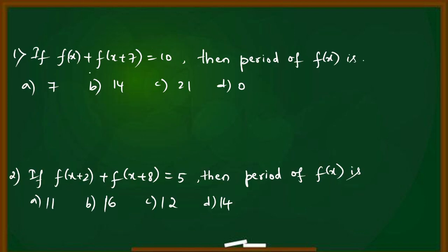First question: If f(x) + f(x+7) = 10, then the period of f(x) is: a) 7, b) 14, c) 21, d) 0. The period of f(x) using the formula is 2 modulus of b minus a. b is 7 and a is 0, so 2 times 7 equals 14. Option b is our answer.